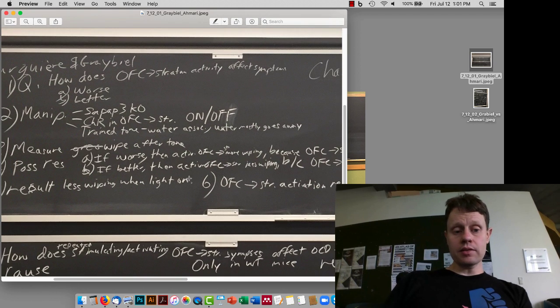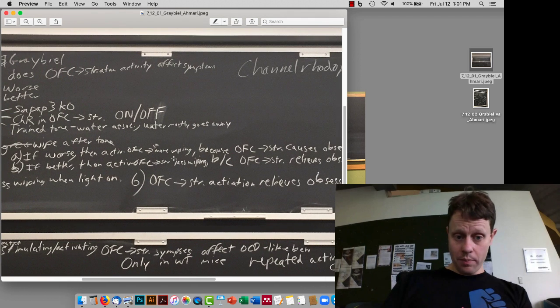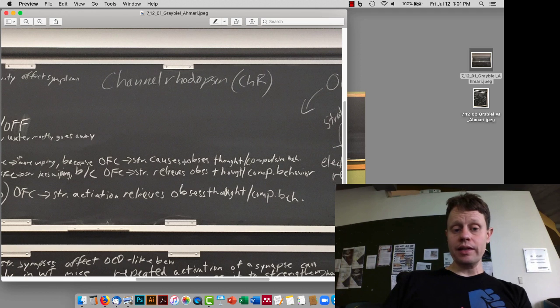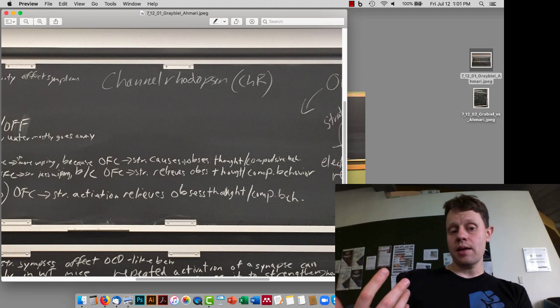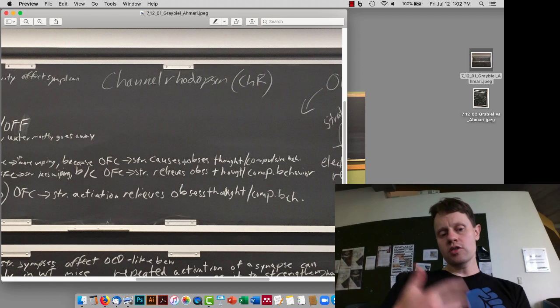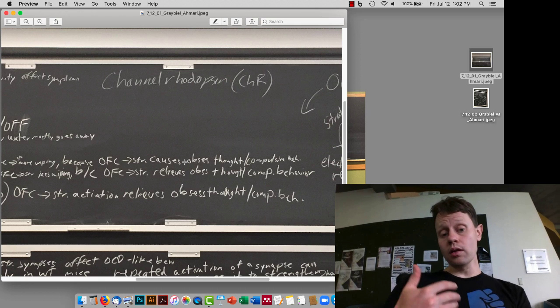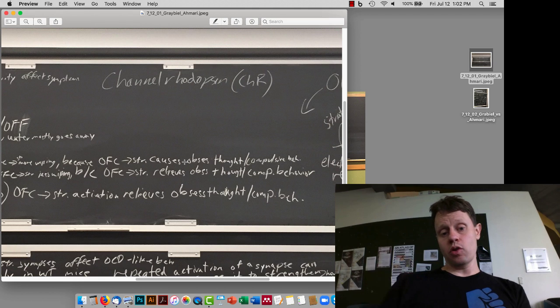The other possibility is maybe activating the synapse makes things better. So what we would observe then is that when we activate the OFC there will be less wiping because the OFC striatum activity relieves this. This is sort of following up on the Chamberlain paper. We saw that those synapses are a little bit weaker, or at least a lot of synapses in the striatum are a little bit weaker. So maybe turning this on will make up for these weaker synapses by just having more activity.